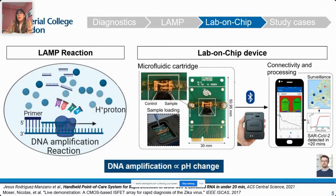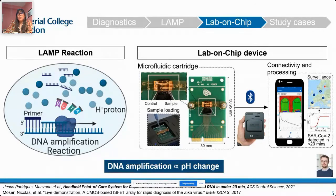The microchip that enables detection is based on ion-sensitive field effect transistors — ISFETs — and these sensors are fabricated in a modified CMOS technology with the ability to measure pH. When nucleic acid amplification occurs, protons are released and this changes the pH of the solution, which is what is measured with our ISFET sensors.